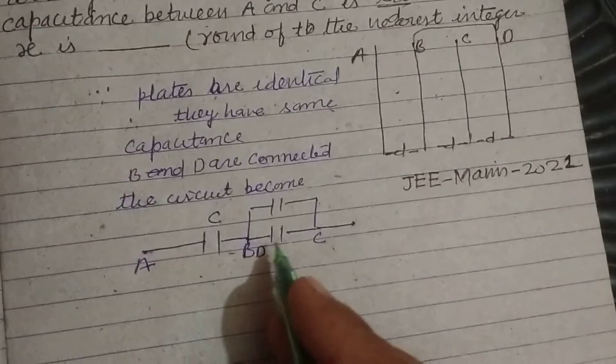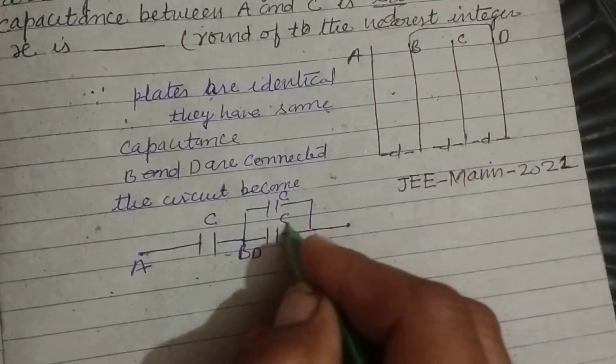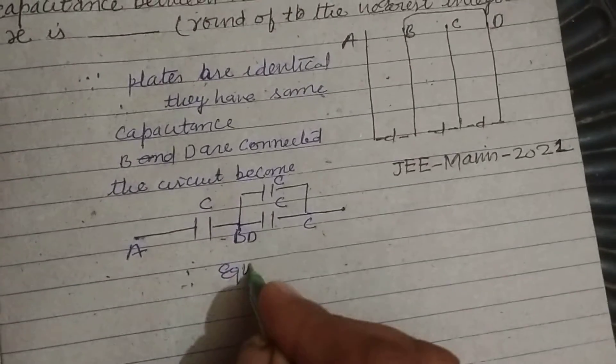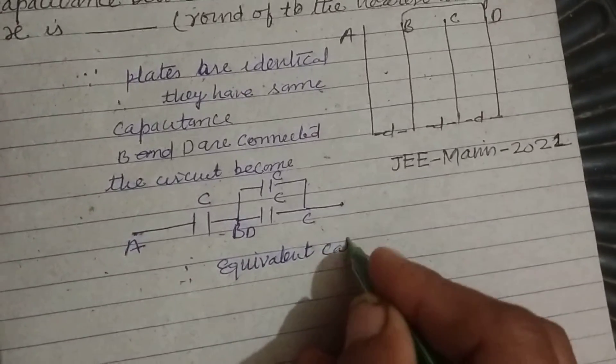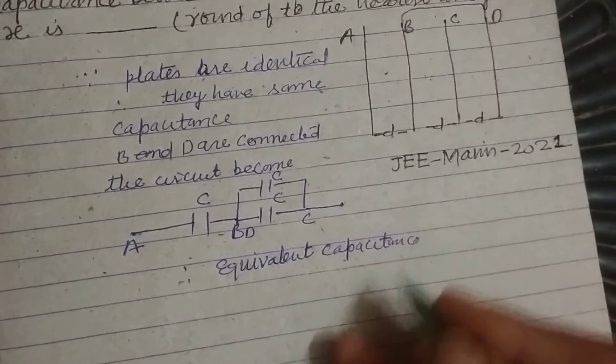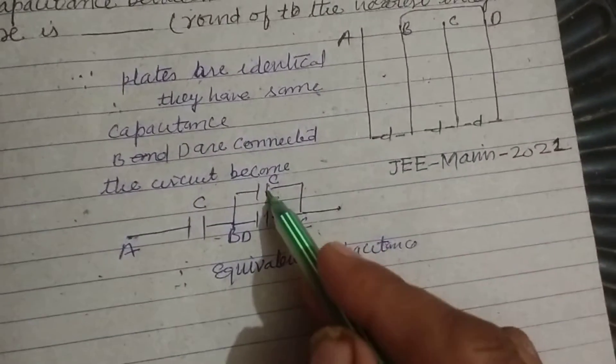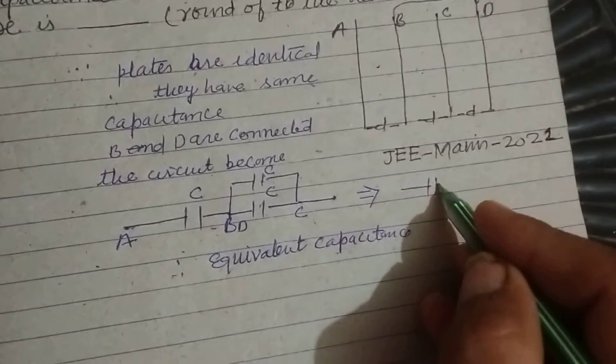Now, these have same capacitance C, C. So for equivalent capacitance, these two plates are in parallel. The circuit becomes in this way.